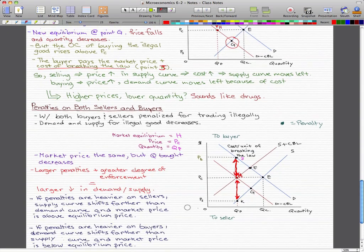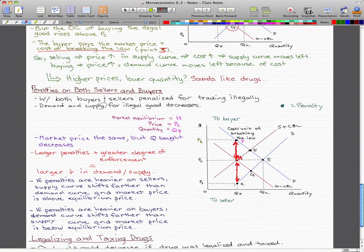Now, let's take a look at the penalties on both buyers and sellers. With both buyers and sellers being penalized for trading illegally, the demand and supply for illegal good decreases. So, the new market equilibrium is at point H, which is actually in here. It's what I'm hovering over right now, this H area, which is red on red, which is pretty much a bad idea, I guess, to make everything so red.